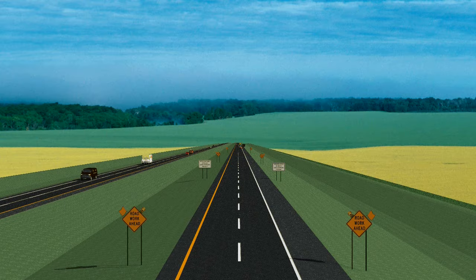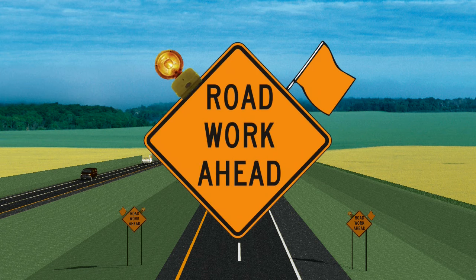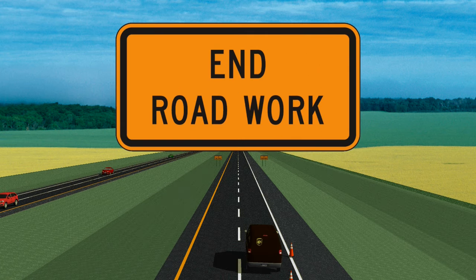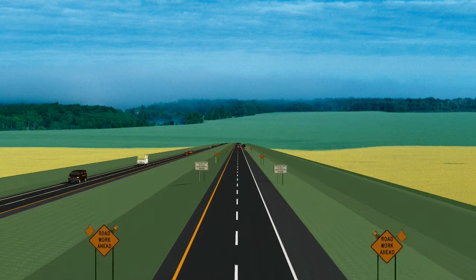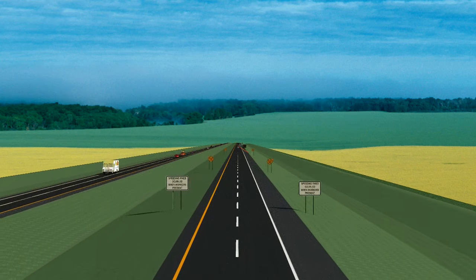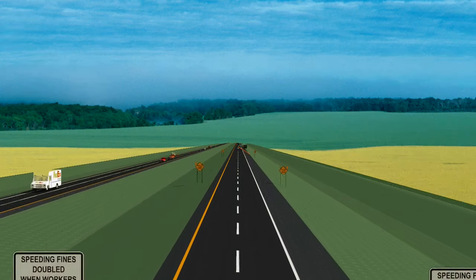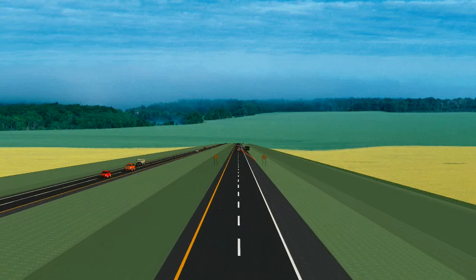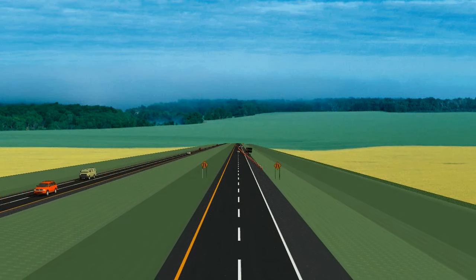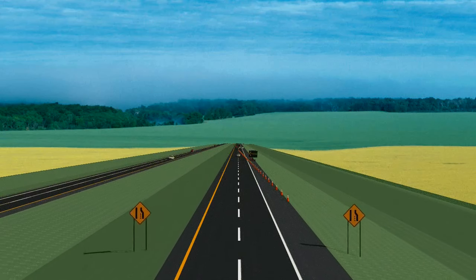The traffic control zone is the area between the advance warning sign and the point beyond the work where traffic is no longer affected. Most traffic control zones can be divided into four areas. In this part of the training, we'll look at each of the areas and examine them for one direction of travel. If your work will affect more than one direction of travel, the same principles covered here will apply to traffic in all directions.